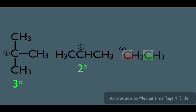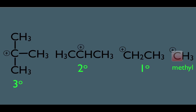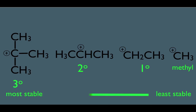An example of a primary carbocation would be this structure right here — the positively charged carbon has one carbon directly bonded to it, making it primary. And a methyl carbocation has no carbons directly bonded. The trend to put to memory is: tertiary carbocations are the most stable, methyl are the least stable, and stability increases from methyl to tertiary.